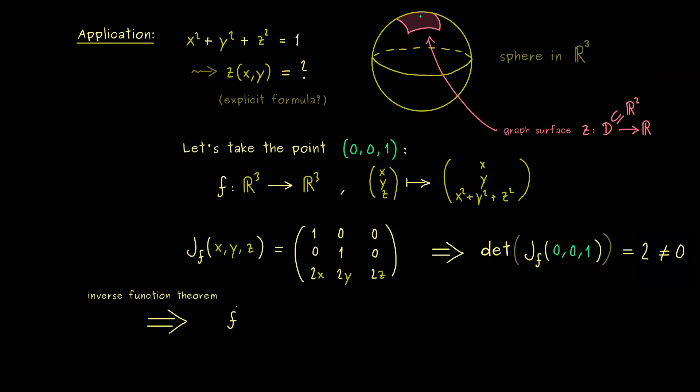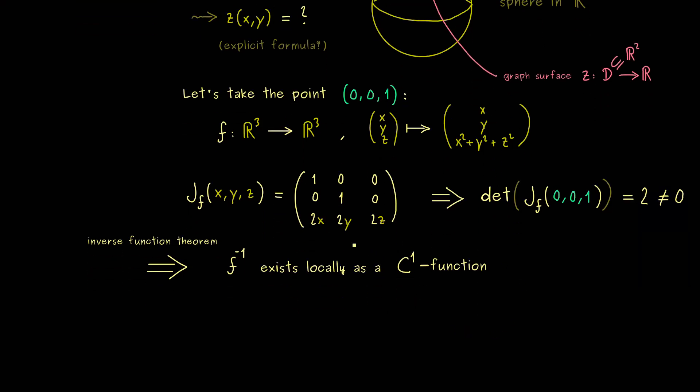So roughly speaking, we could just say f inverse exists locally. And it is also a C1 function, which is important if you want to calculate derivatives. But first for us, the equation of the inverse function is important. In short, it just means that f inverse of f of x is equal to x.